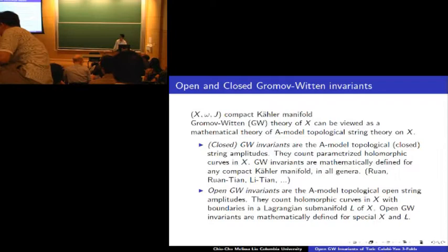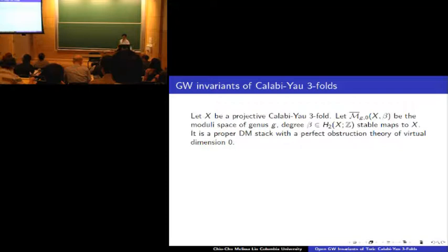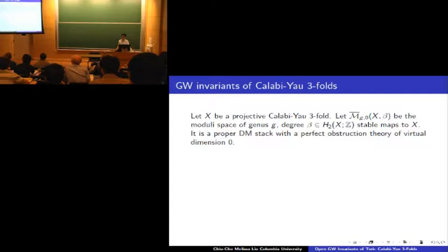So next, I would like to review the Gromov-Witten invariants of Calabi-Yau threefolds. This has been mentioned in this conference many times, so maybe I should give you a mathematical definition. Let X be a projective Calabi-Yau threefold, and let M-bar_{g,0}(X, beta) be the moduli space of genus g degree beta stable maps to X.